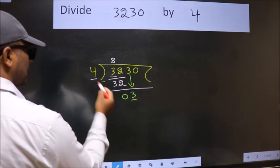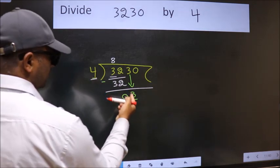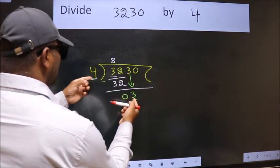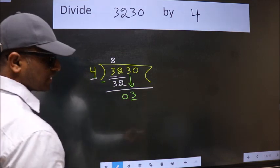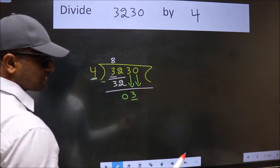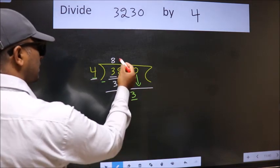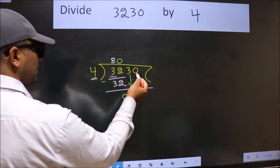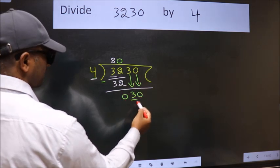Now, here we have 3, here 4. 3 is smaller than 4. So we should bring down the second number. The rule to bring down the second number is put 0 here. Then only we can bring this number down. So, 30.